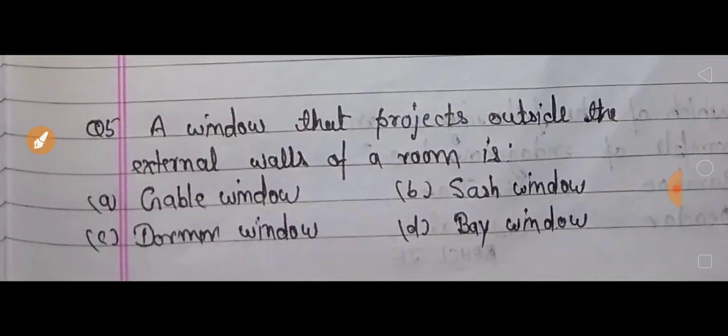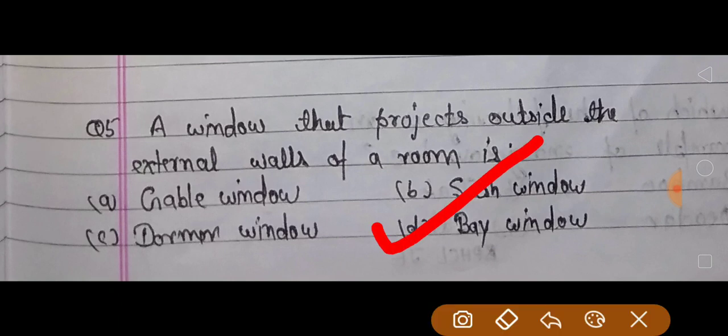अपना next question: a window that projects outside the external walls of a room is? जो बाहरी दीवार होती है, उसकी तरफ जो window निकली होती है, जो projected है, उस window का क्या नाम है? तो अपना correct answer है bay window.